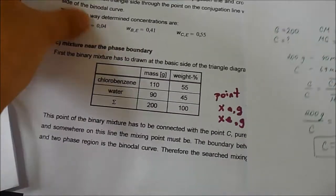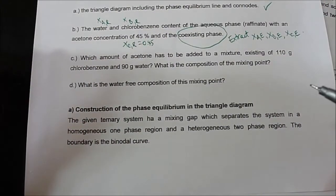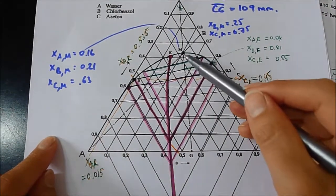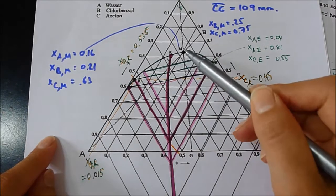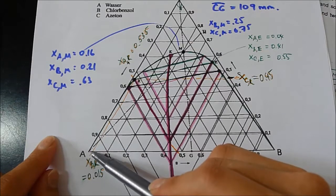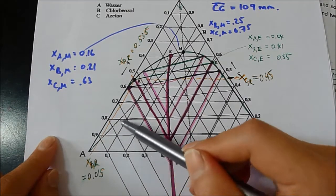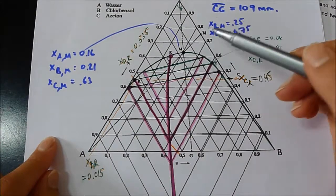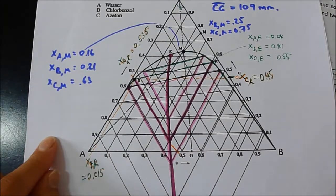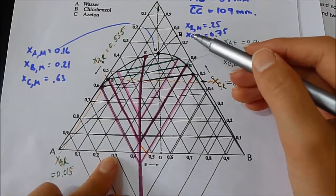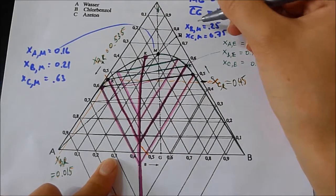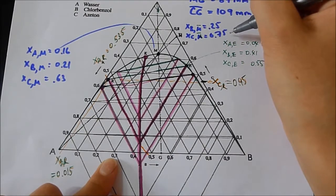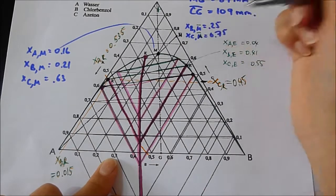The next question asks us, what is the water-free composition of the mixing point? In order to find the water-free composition of the mixing point, you connect M with A, because at this point, water is zero. You connect A to M and M to the C side, because at this side, A is zero. You find M bar. After finding the M bar, you can find the mole fractions of the M bar. It was determined XBM bar is equal to 0.25, XCM bar is equal to 0.75, and XAM bar is equal to zero.